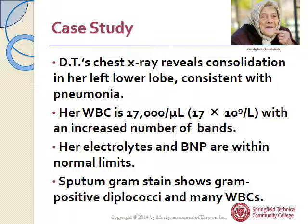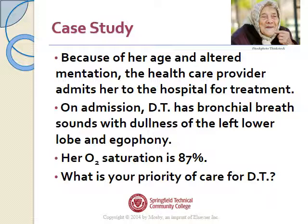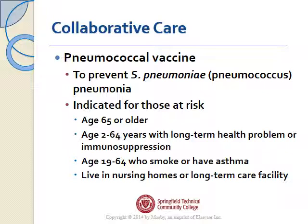DT's chest x-ray reveals a consolidation in her left lower lobe consistent with pneumonia. Her white count is 17,000 with an increased number of bands. Her electrolytes and BNP — a measure of heart failure — are both within normal limits. Her sputum sample shows gram-positive diplococci and many white blood cells. Because of her age and altered mentation, the healthcare provider admits her to the hospital. On admission, DT has bronchial breath sounds with dullness of the left lower lobe and egophony, and her oxygen saturation is 87%. Your priority of care is to get her oxygen up.